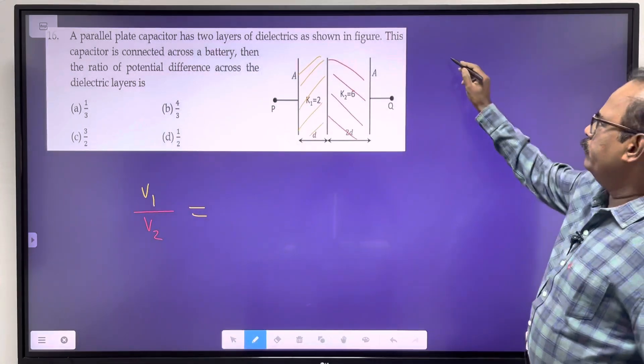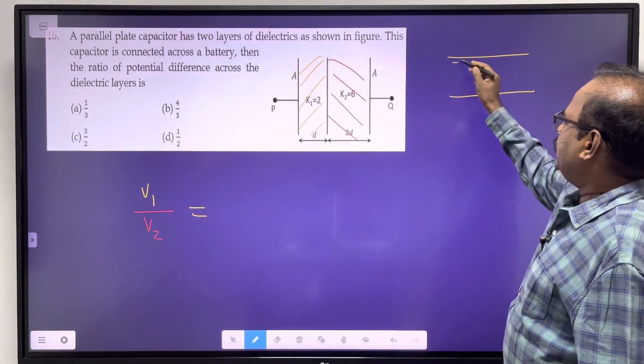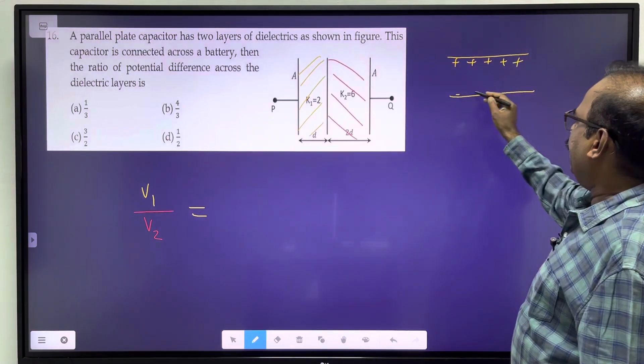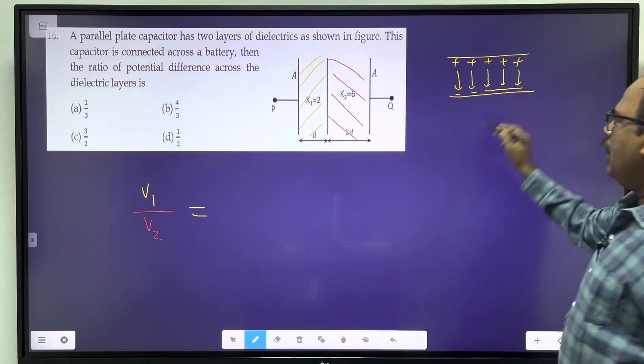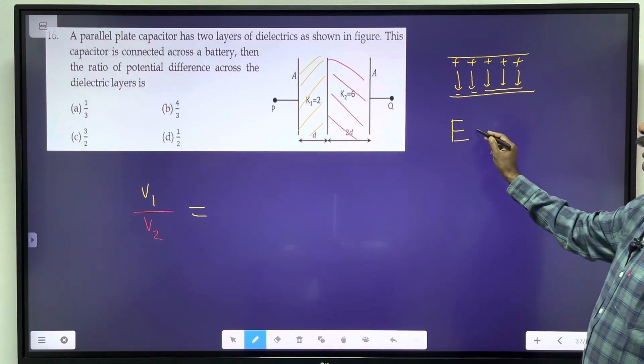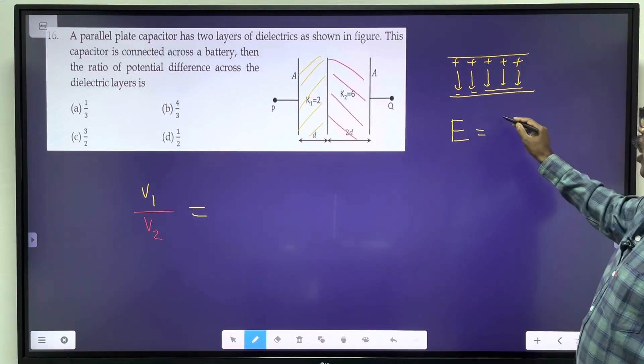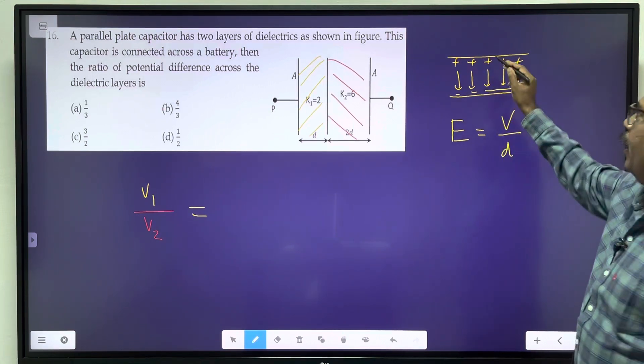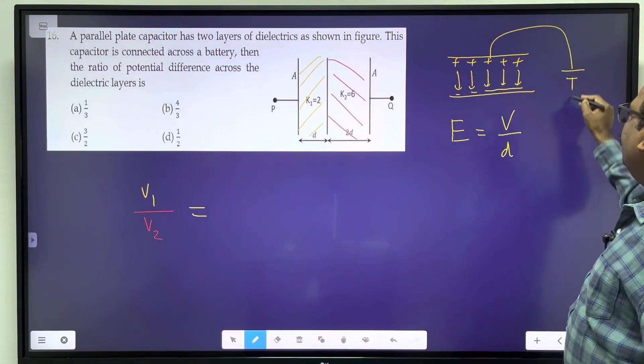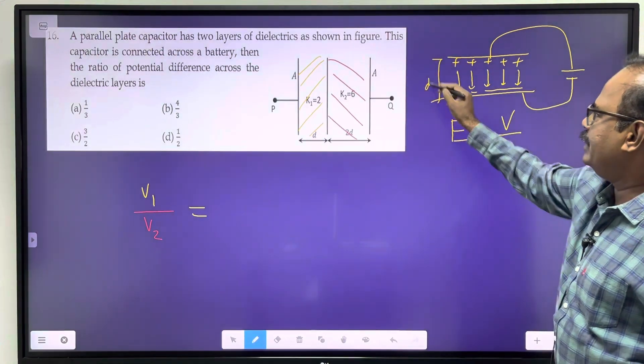There is a parallel plate capacitor with a plate of positive charges and negative charges. The electric field comes from positive to negative. The electric field is volt per meter, and the potential difference is applied. The distance between the plates is D.